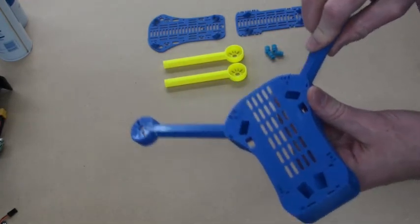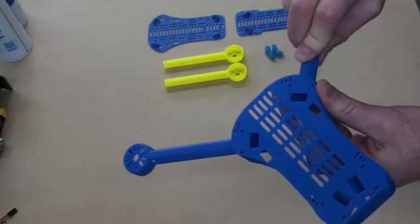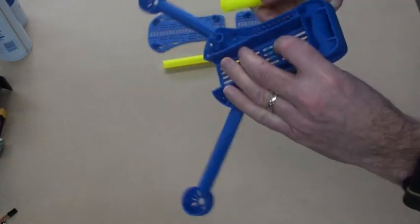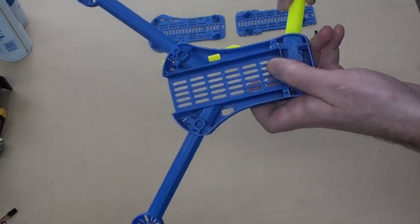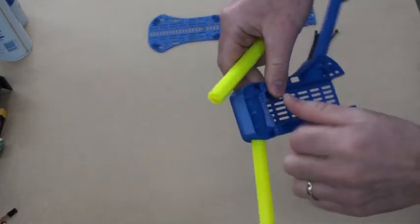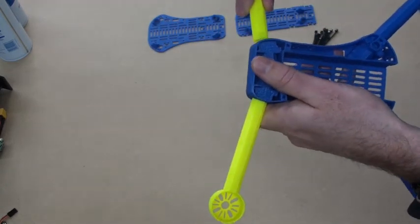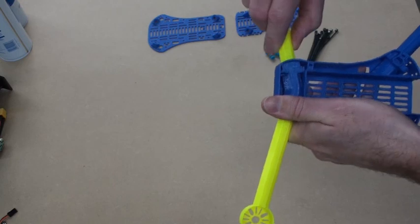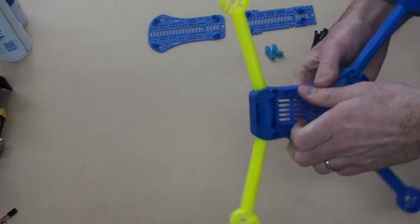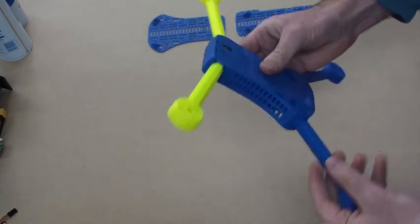So we'll just put these into here. Okay, so that's the arms installed, but we need to stop them from coming out, so that's where our cable ties come in.